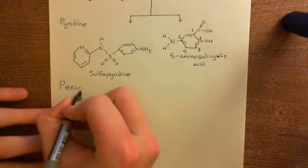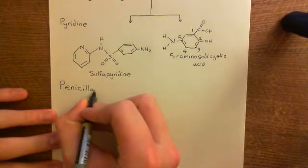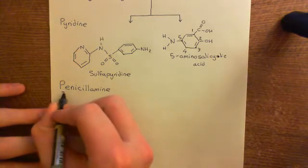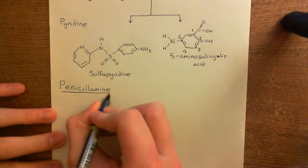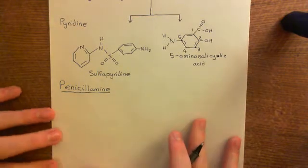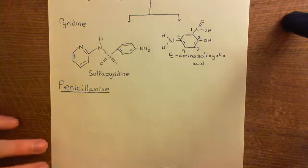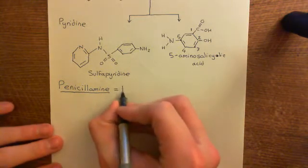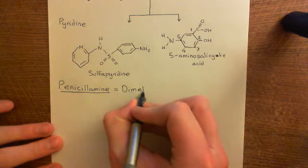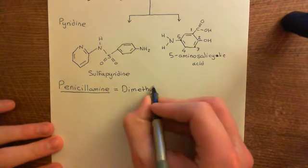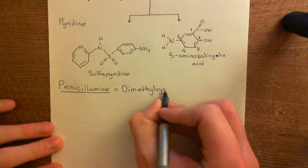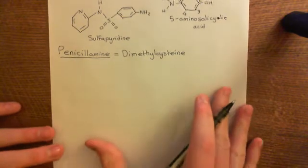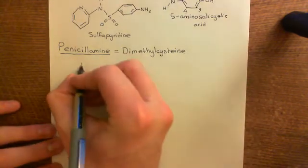I firstly want to discuss the structure of penicillamine, and that's really all I'm going to be able to tell you about, because the mechanism by which penicillamine is effective against rheumatoid arthritis isn't really known at all. It's also called dimethylcysteine — it has a very similar structure to the amino acid cysteine. I'll show you the structure of cysteine, and then we'll look at how penicillamine is just a modified form of it.